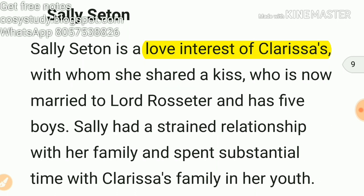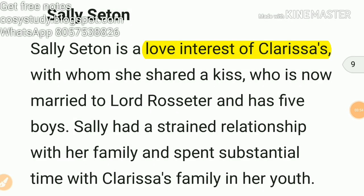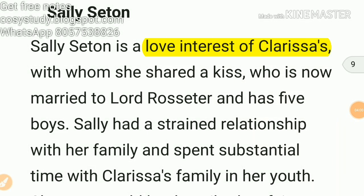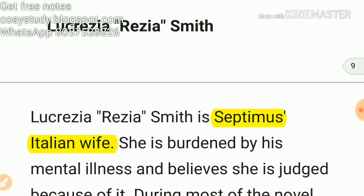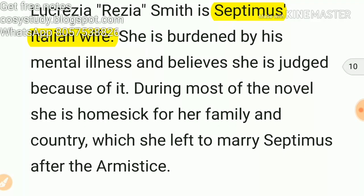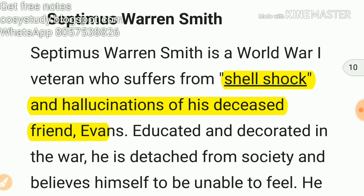Sally Seton is the love interest of Clarissa, with whom she shared a kiss. Lucrezia Smith is Septimus's Italian wife and she is burdened by his mental illness. Septimus Warren Smith suffers from shell shock and hallucinations of his deceased friend Evans.